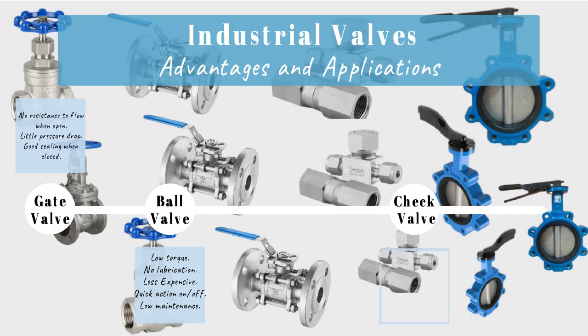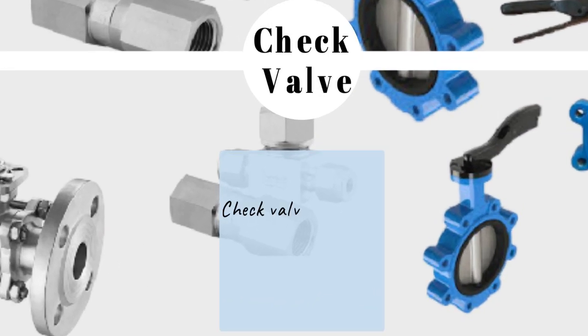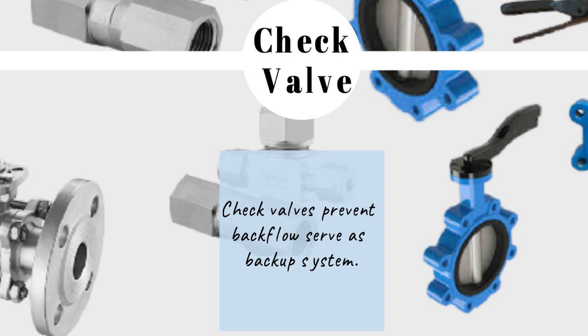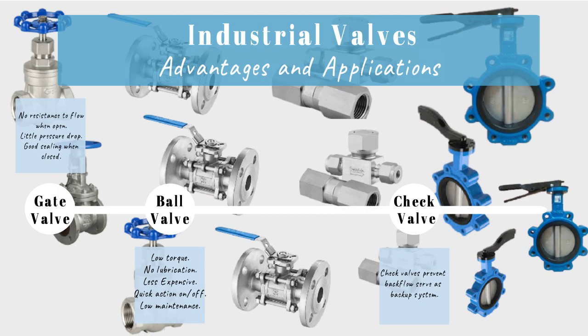Check valves: allow liquid to flow in one direction only and prevent backflow of media in the reverse direction. Commonly found protecting pumps in liquid applications, compressors and gas systems, where backflow can cause the pump or compressor to shut down.